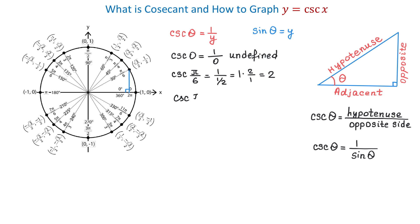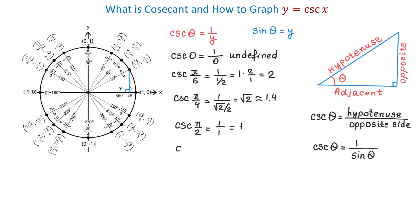Cosecant of pi over 4 is 1 over (square root of 2 over 2). At pi over 4, the value of y is square root of 2 over 2. This equals square root of 2, which is approximately 1.4. Let's continue with the angles pi over 2, pi, and 3 pi over 2. Cosecant of pi over 2 equals 1 over 1, which makes 1. Cosecant of pi is 1 over 0, and this is again undefined. And cosecant of 3 pi over 2 is 1 over negative 1, which makes negative 1.